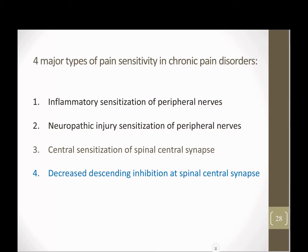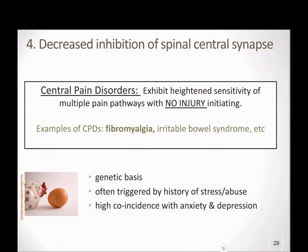We talked about central sensitization, and now we're going to talk about the effect of decreasing the descending inhibition at the spinal central synapse. Decreasing that descending inhibition really underlies a whole set of chronic pain disorders called central pain, and the one that we most commonly think about is fibromyalgia.